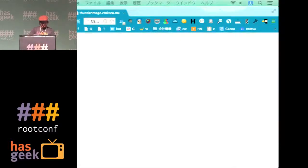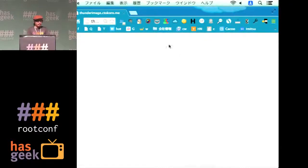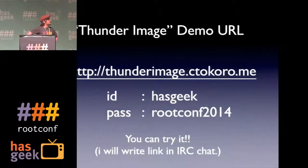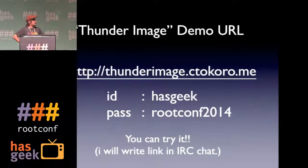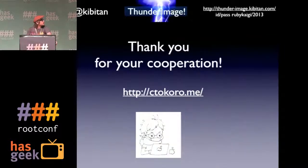The internet is not working now. The URL is fund-image dot c-to-call dot me. The ID has a key and password — the root comes to 014. You can try it yourself. There are some features like face detecting, rotating, resizing, and you can check the performance. Thank you for your cooperation.